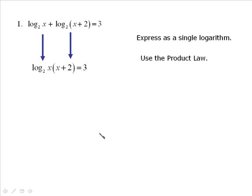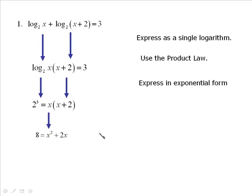Once you get it down to a single logarithm, it's very important that you remember you can't really go any further with it the way it is. So you need to express it in exponential form and then it's solvable. You get rid of the logarithm. So we then get 2 to the exponent of 3. 2 cubed is equal to x times x plus 2, and there's no more logarithm.